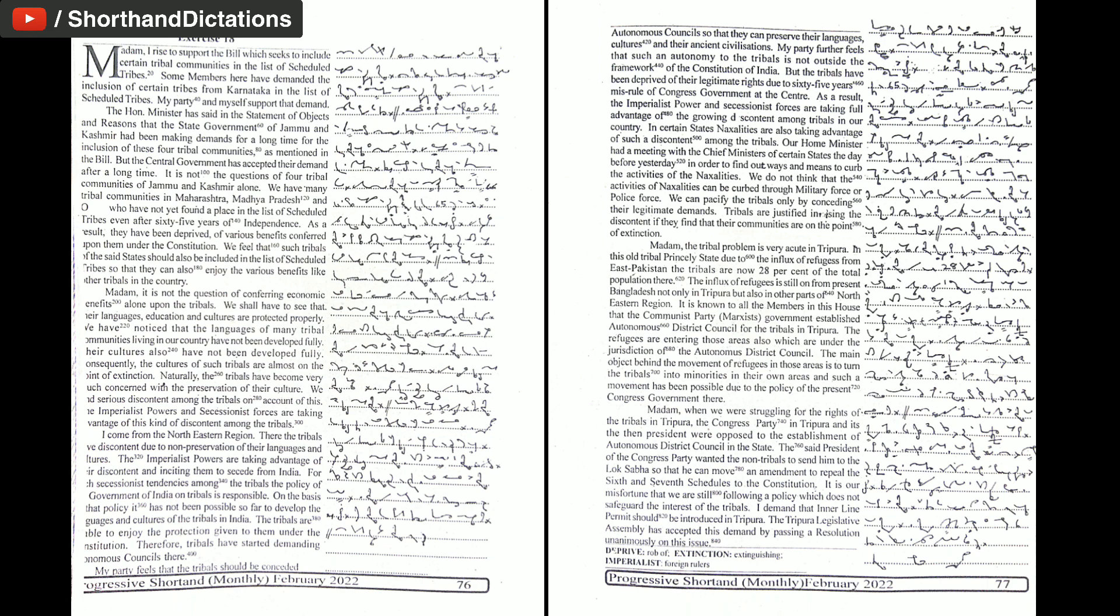It is not the question of four tribal communities of Jammu and Kashmir alone. We have many tribal communities in Maharashtra, Madhya Pradesh and Odisha who have not yet found a place in the list of scheduled tribes even after 65 years of independence. As a result, they have been deprived of various benefits conferred upon them under the constitution. Such tribals should also be included so that they can enjoy the various benefits like other tribals in the country.